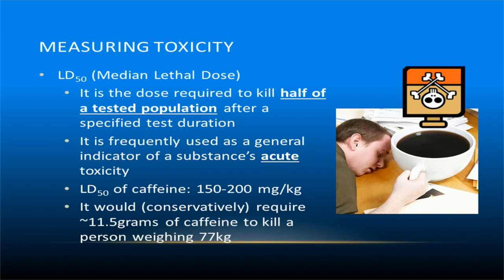The toxicity of a substance can be measured by its effects on the target organism, organ, tissue, or cell. Because individuals typically have different levels of response to the same dose of a toxin, a population level measure of toxicity is often used, which relates to the probabilities of an outcome for a given individual within a population. This level is called the median lethal dose, which is the dosage of a substance required to kill half of a tested population after a short test duration. The median lethal dose is frequently used as a general indicator of a substance's acute toxicity.